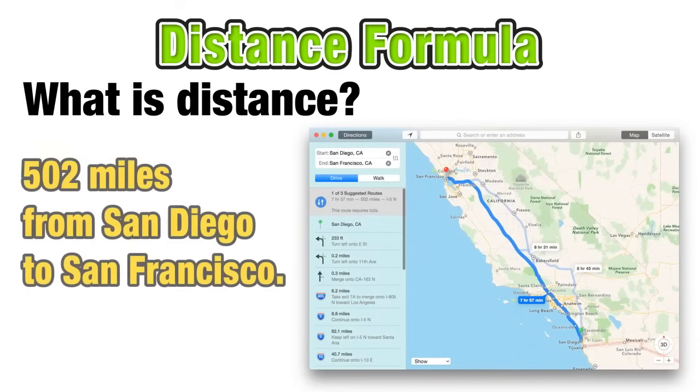When we use the GPS, we're looking at distances between a starting point and an ending point. Just like the drive from San Diego to San Francisco would be a distance of 502 miles.